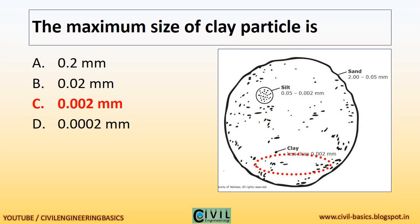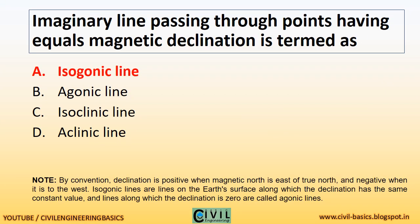The maximum size of a clay particle is 0.002 mm. An imaginary line passing through points having equal magnetic declination is termed as an isogonic line.